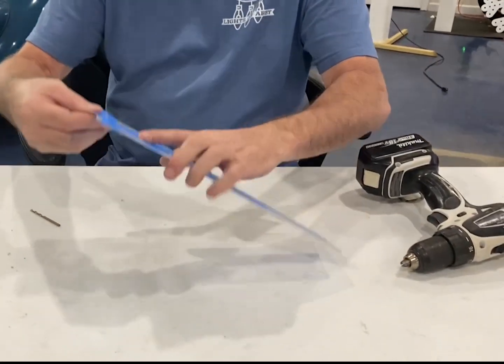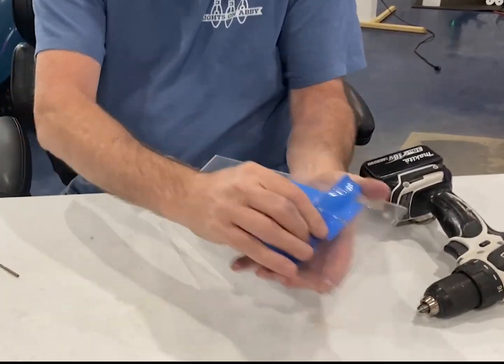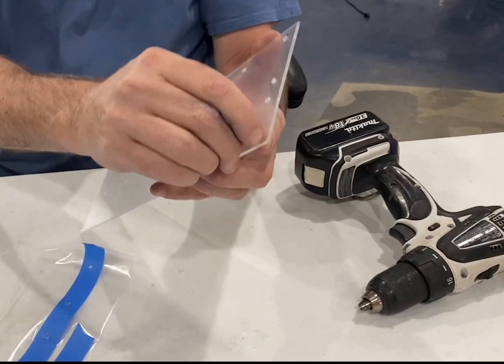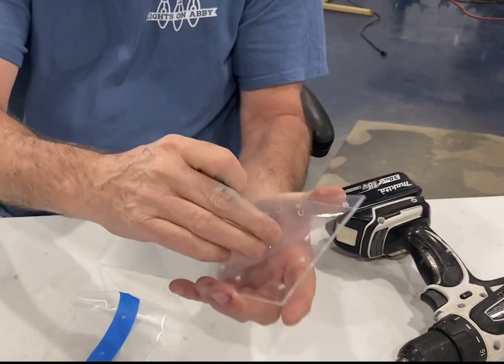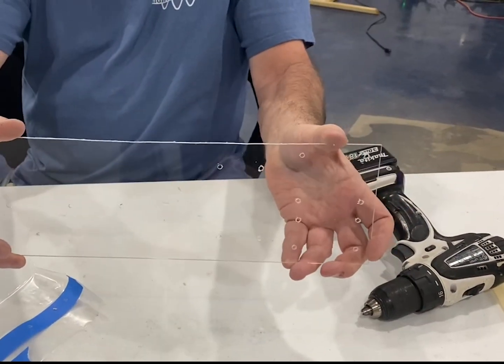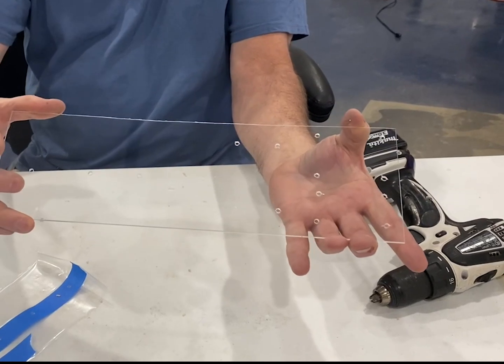Now that we have everything drilled, you can take the protective cover off. And to do that, you can just grab a hold of the tape that you left on and it just peels right off. It comes right off. Your acrylic's all drilled, ready to mount your boards. Let's get that done.